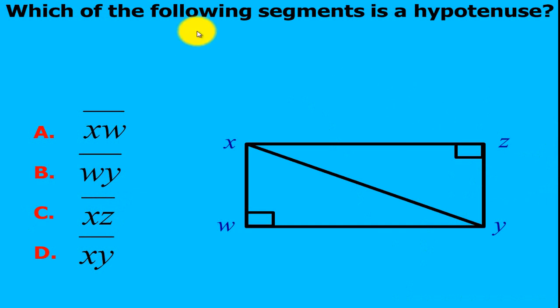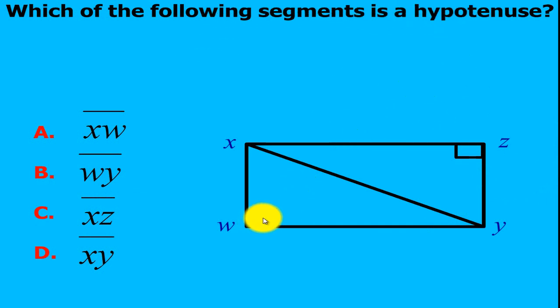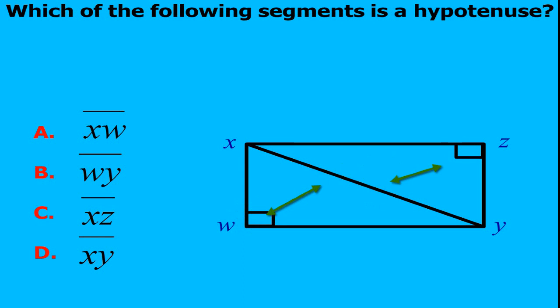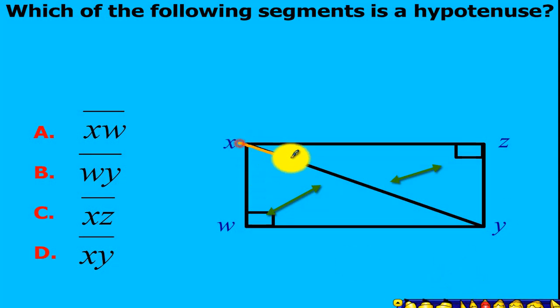Which of the following segments is a hypotenuse? Again, look at your right angle. The side across this right angle will be your hypotenuse. So in this case, this will be our hypotenuse — it should be segment XY.